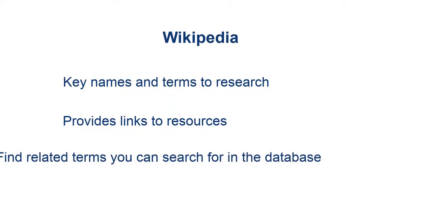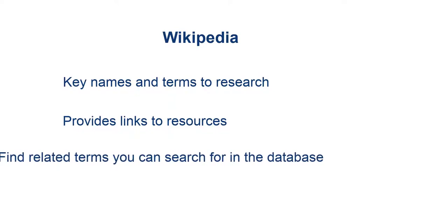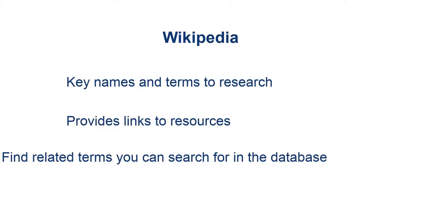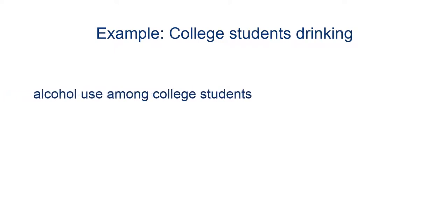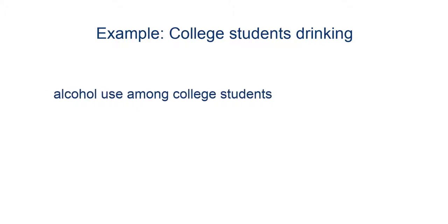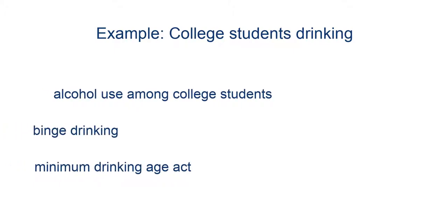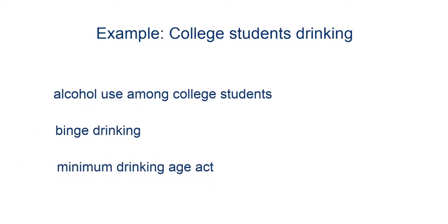It may also help you find related terms you can use to search in the databases. For example, if I search on college students drinking in Wikipedia, it tells me that the page doesn't exist but that 'alcohol use among college students' does. It also suggests some other related topics like binge drinking or the minimum drinking age act.